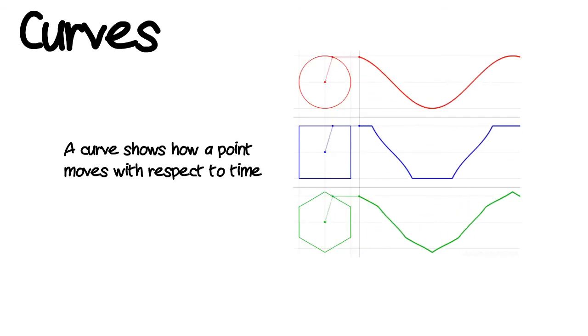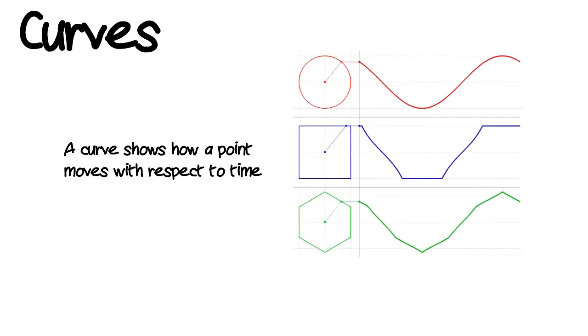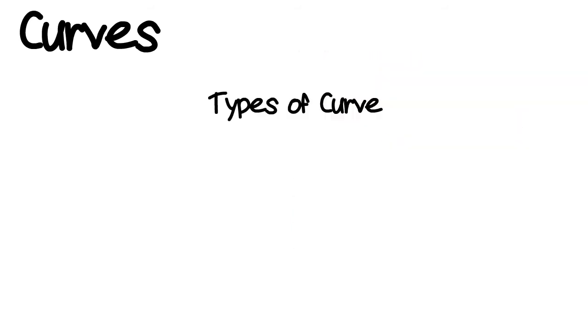Okay, so let's start off with the basics. What is a curve? So a curve is a physical representation of how a point moves with time. We're going to be looking at two types of curves. So they are plane curves and space curves.